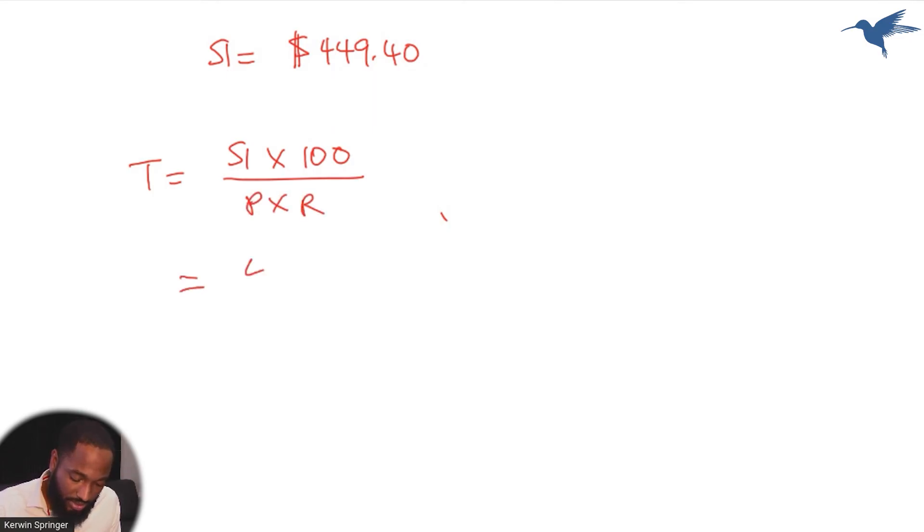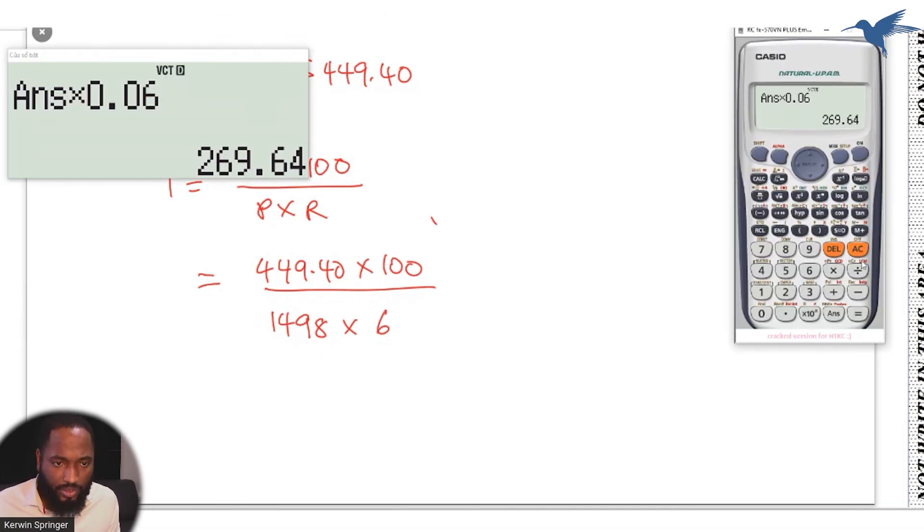And remember, time is the simple interest by 100 divided by the other two guys. The simple interest is $449.40 times 100 over principle was 1498 and the rate was 6. This is looking like it can divide clean into that. Let me see what happens. $449.40 multiply by 100, which is silly, I could just move the points a little bit, and then divide by 1498 times 6.